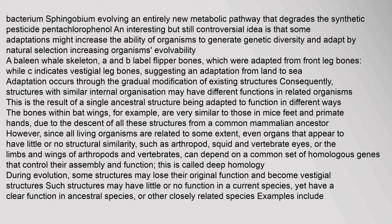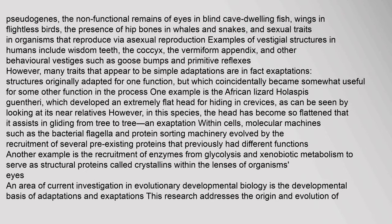During evolution, some structures may lose their original function and become vestigial structures — structures that may have little or no function in a current species yet have a clear function in ancestral or other closely related species. Examples include pseudogenes, the non-functional remains of eyes in blind cave-dwelling fish, wings in flightless birds, the presence of hip bones in whales and snakes, and sexual traits in organisms that reproduce asexually. Examples of vestigial structures in humans include wisdom teeth, the coccyx, the vermiform appendix, and behavioral vestiges such as goose bumps and primitive reflexes.